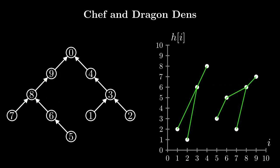For a journey from i to j to be valid, i has to be an ancestor of j, meaning there exists a directed path from j to i. For example, there exists a valid journey from 9 to 5 as 9 is an ancestor of 5 and there exists a path from 5 to 9 in the tree. This also maximizes the value we're meant to find, as we visit the maximum number of possible points by repeatedly visiting r[i]'s from a given point. To confirm whether i is an ancestor of j, we can use binary lifting.